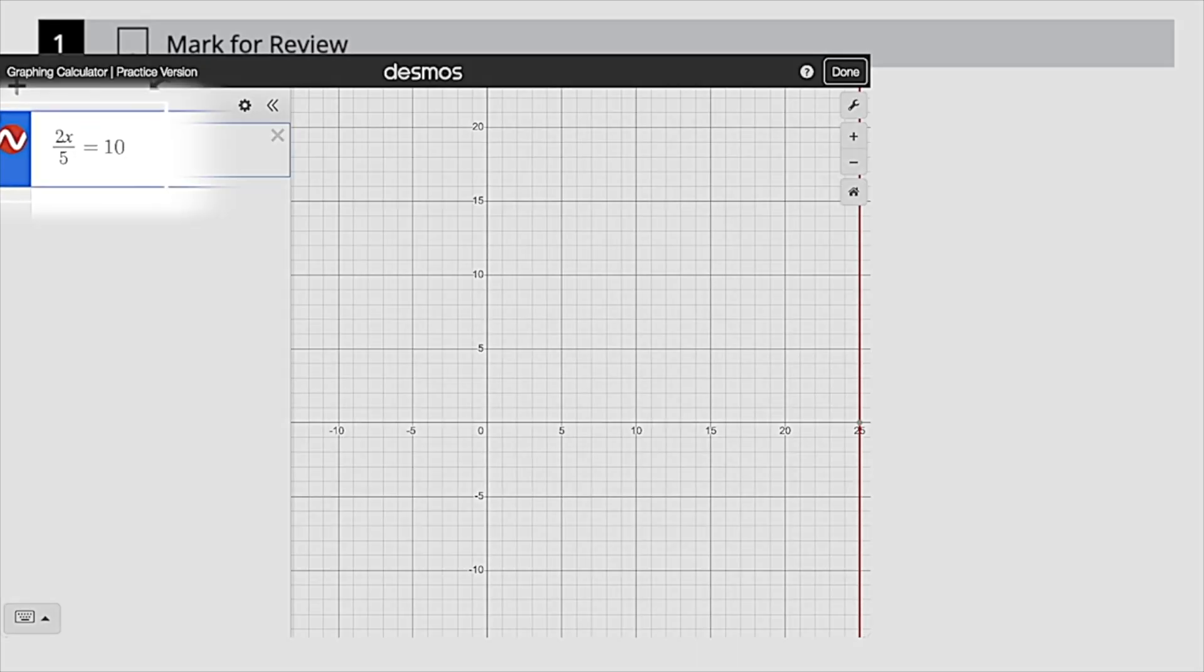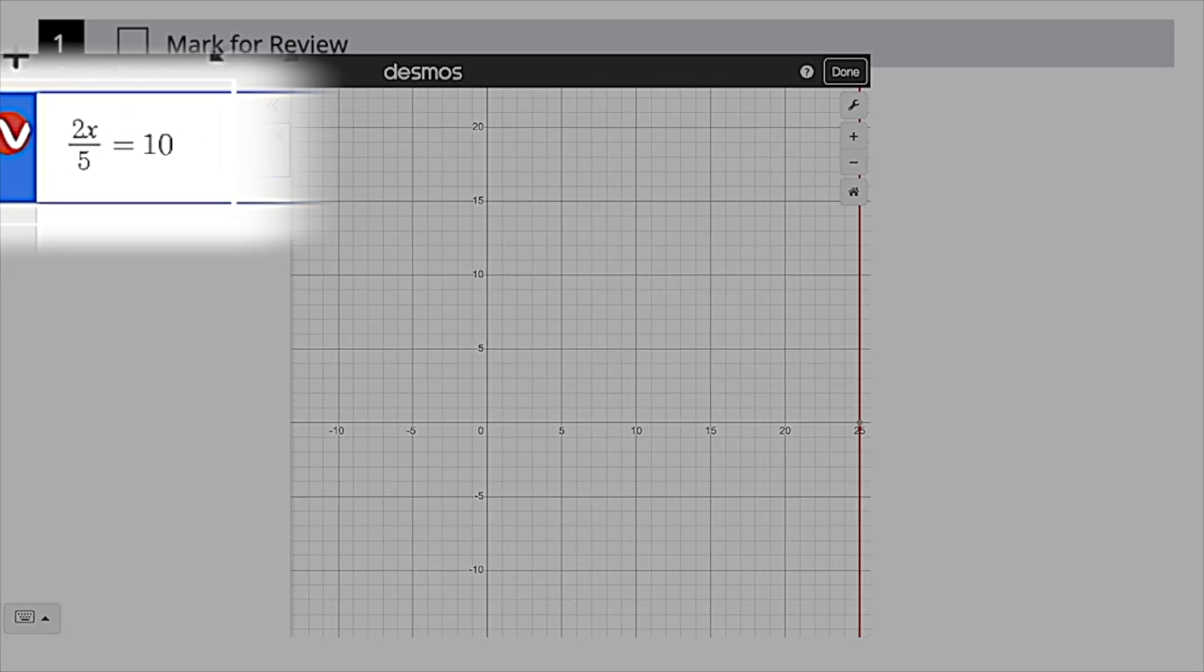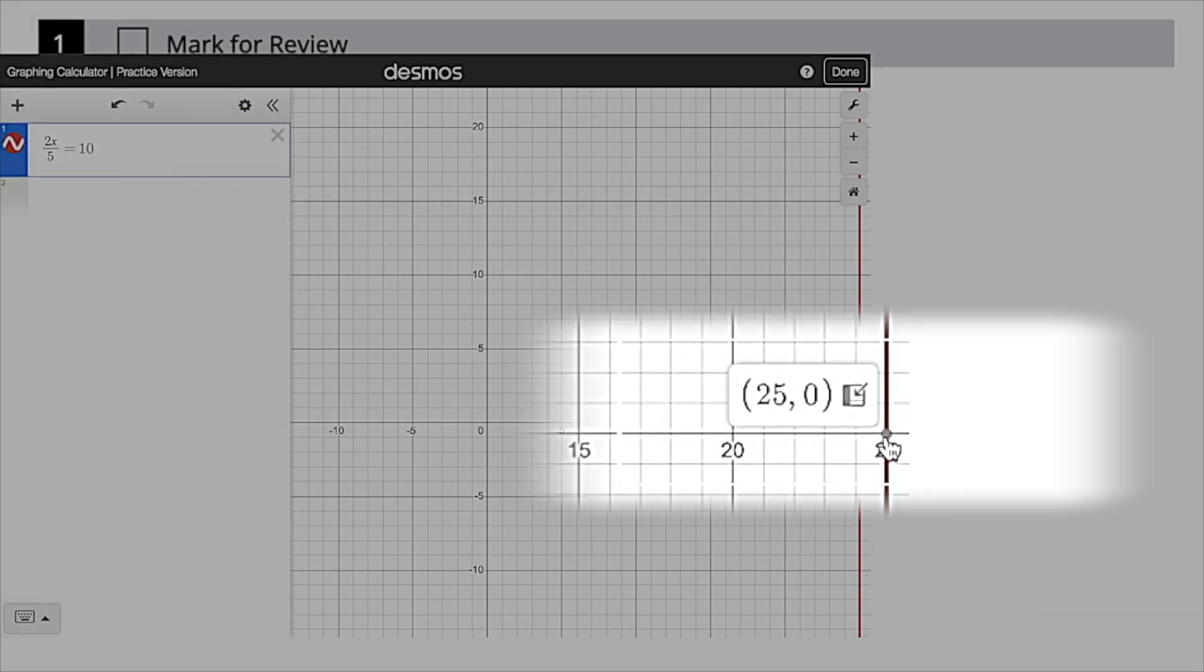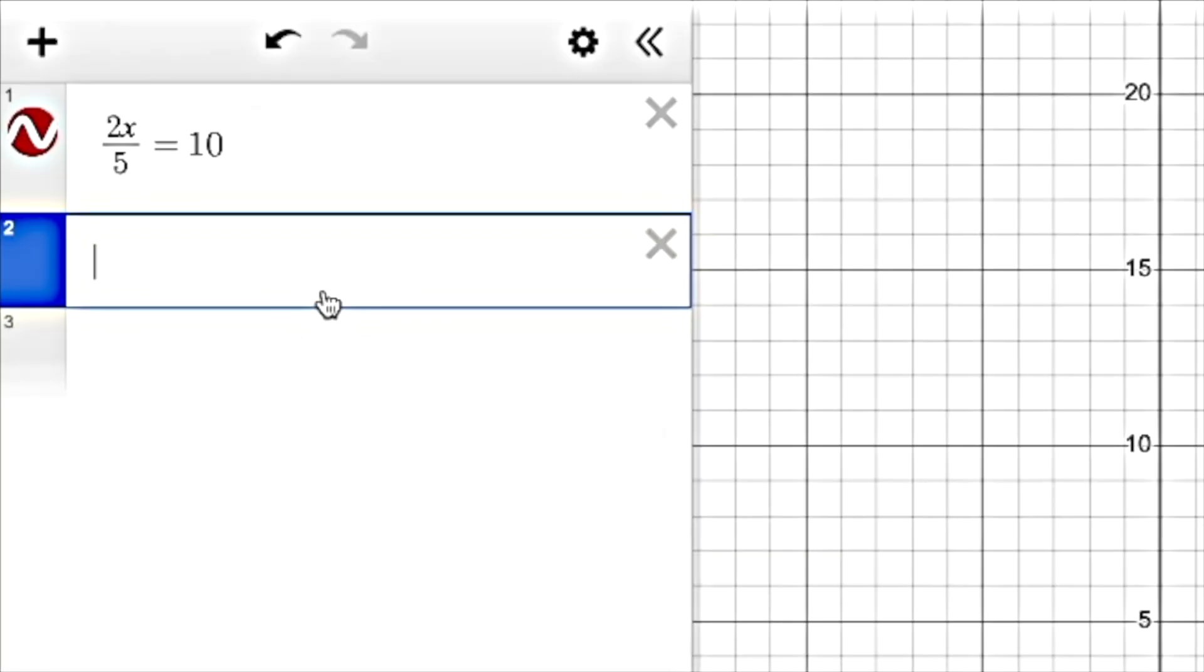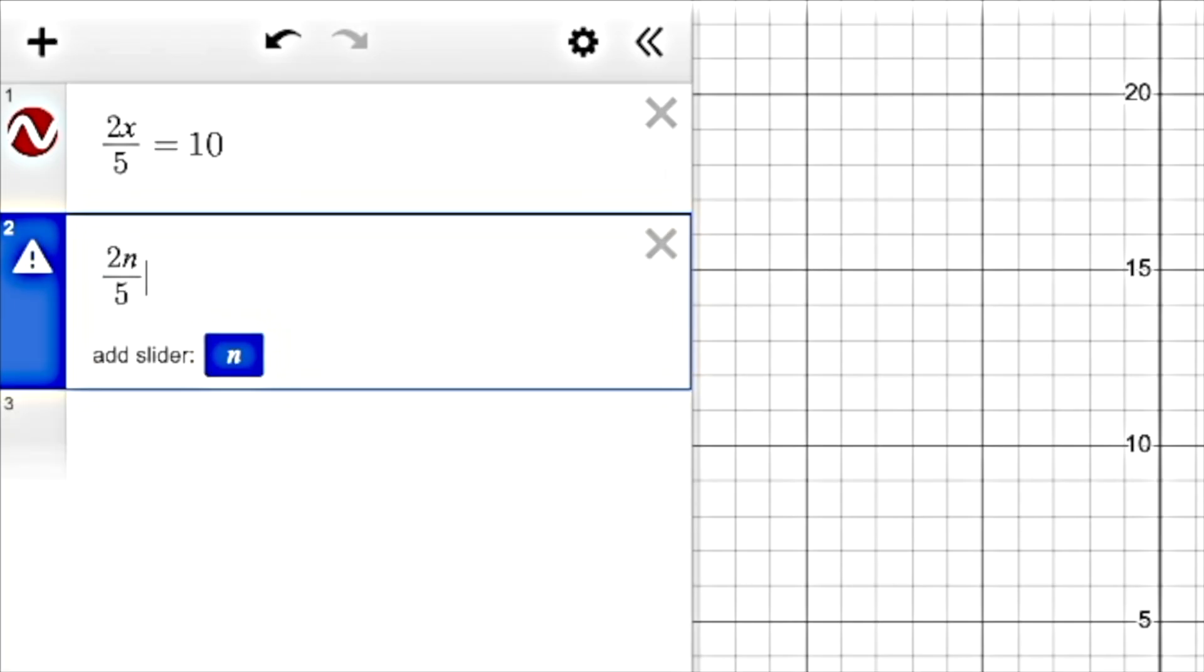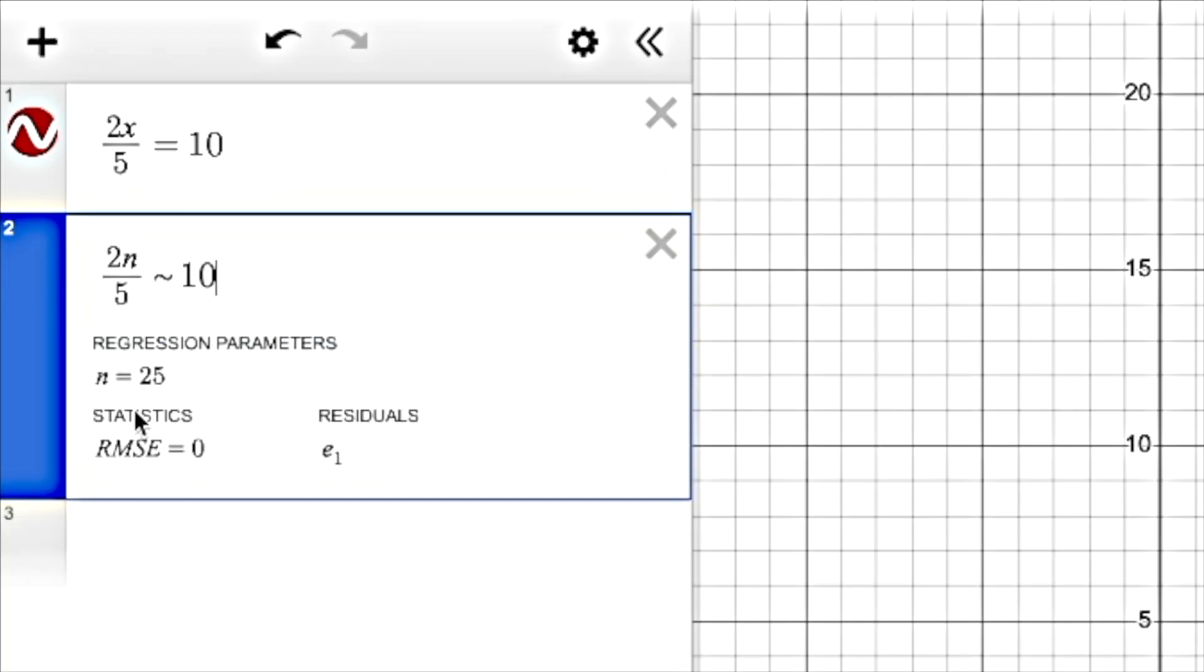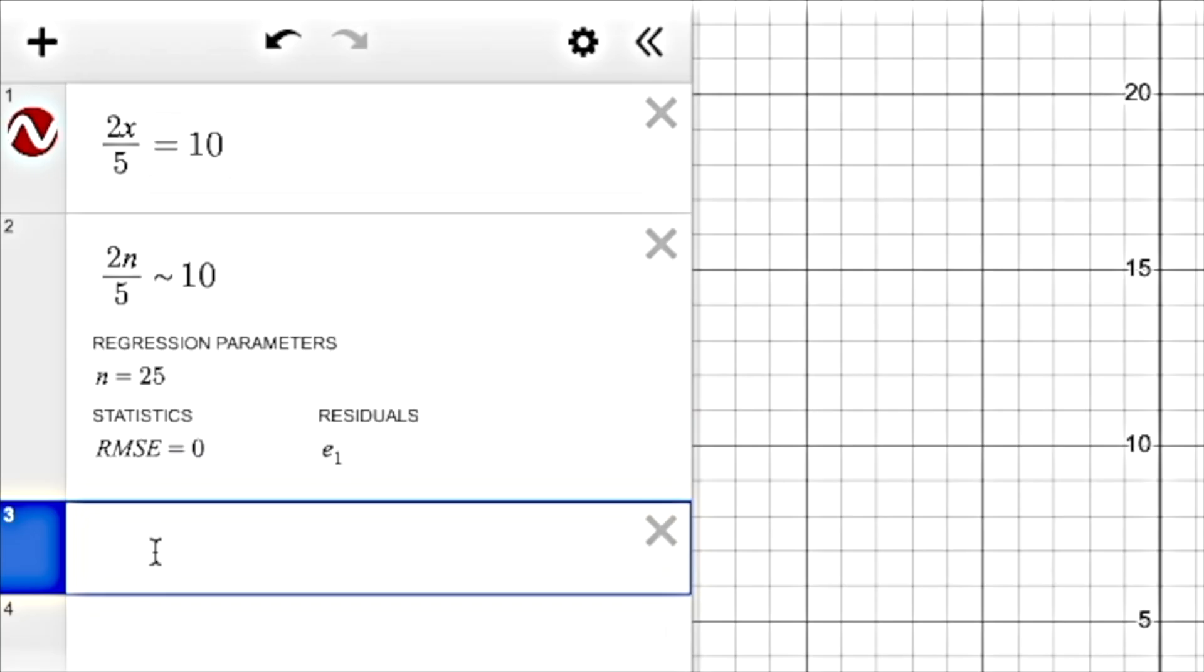Alternatively, if you wanted to use Desmos, you could just plug this in and you could use x instead of n if you want to use the vertical line method. And then you would have to plug that in, basically 25 times 2 is 50 minus 1 is 49. Or if you're feeling really lazy, you could just put 2n over 5. Instead of an equal sign, use a tilde. And then it's going to give you the value of n. But more importantly, if you do 2n minus 1, it'll just give you the answer right here, 49.